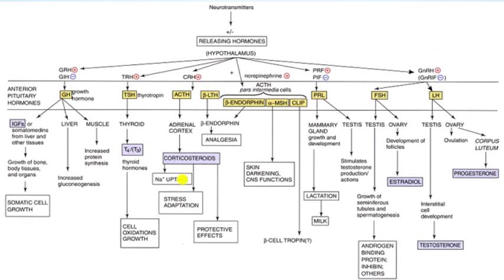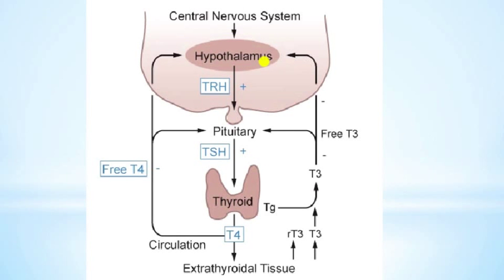Cortisol also gets its name from its effects on glucose metabolism. It goes to the liver and induces glycogenolysis — the breakdown of glycogen to glucose — to increase blood glucose levels. It also induces gluconeogenesis in cells, further increasing blood glucose. Other hormones derived from adrenocorticotropic hormone include beta-endorphin, an opioid important for analgesia, and alpha-MSH, which is essentially melanocyte-stimulating hormone leading to pigmentation in the skin.